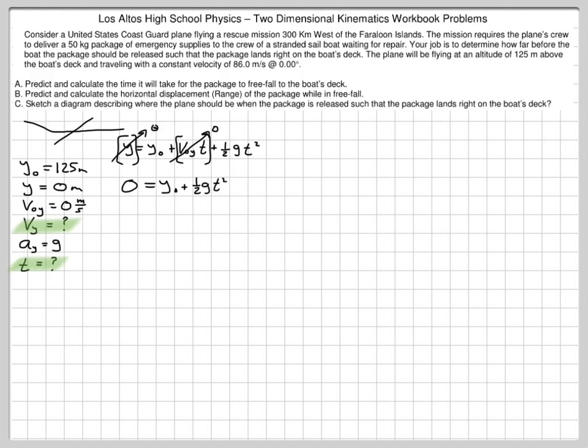And I know all of these quantities except for t, so algebraically I'm going to solve for t simply by subtracting y-naught from both sides. I'm going to multiply two on each side. And now I'm going to divide by g, and then take the square root of both sides. So I'll end up with an expression that looks like the square root of negative two y-naught divided by g.